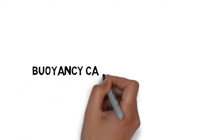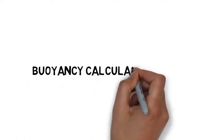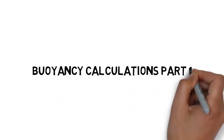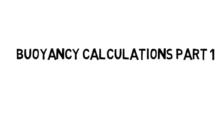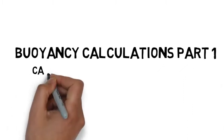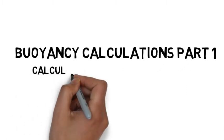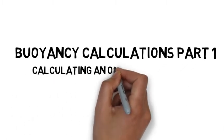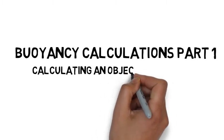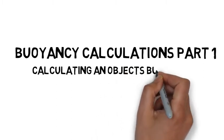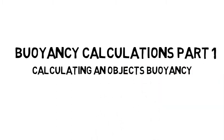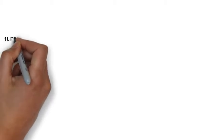We are on buoyancy calculations now — this is part one: calculating an object's buoyancy. What I mean by that is being able to say whether a given object would be either positive, negative, or neutrally buoyant in either fresh or salt water.